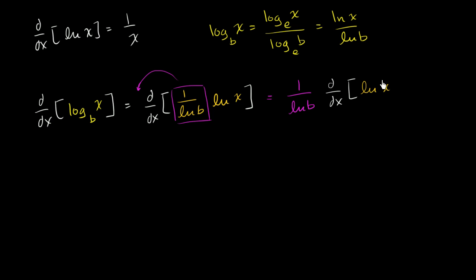And we know what to do with this. This thing right over here is just going to be equal to 1 over x. So we end up with 1 over the natural log of b times 1 over x.